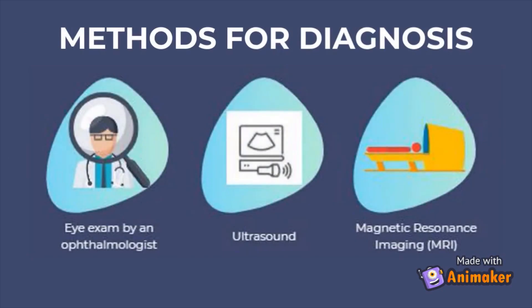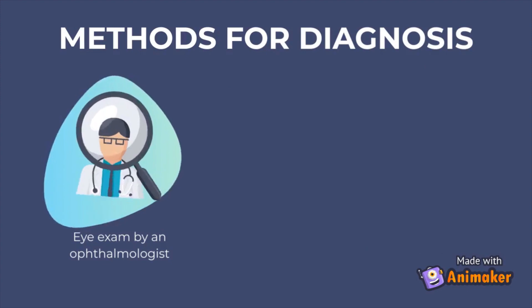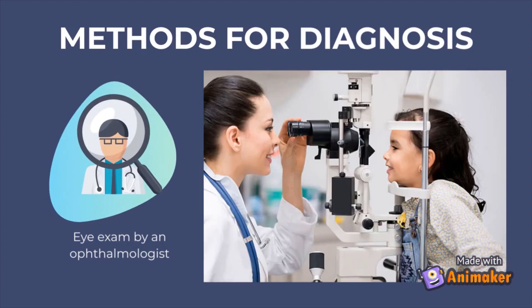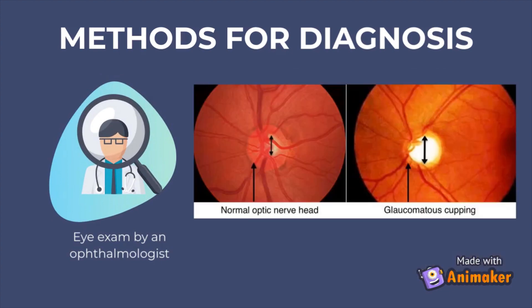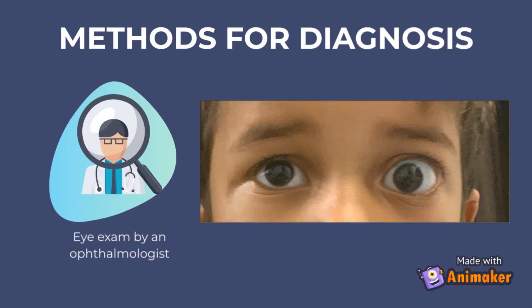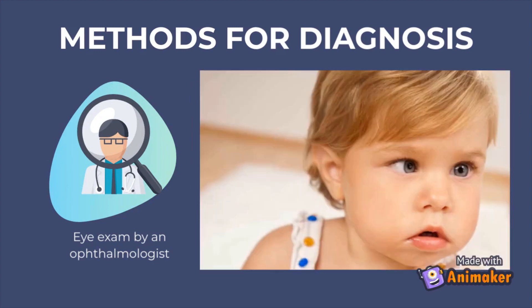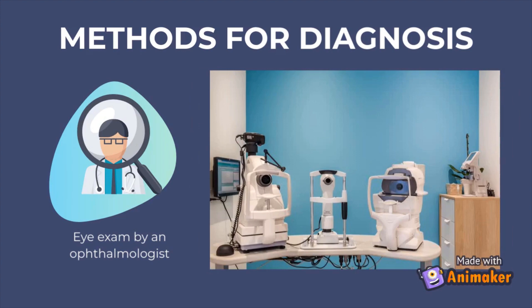Some tests and procedures commonly used to diagnose retinoblastoma include eye exams, ultrasounds, and magnetic resonance imaging. These procedures are conducted by ophthalmologists, also known as eye specialists. An eye exam is where the specialist checks eye health and looks for signs of retinoblastoma, some of which include glaucoma (increased eye pressure), proptosis (enlarged eyeball), and may also explore other eye conditions such as lazy eye. The specialist may also take images of the inside of the eye to determine the shape, size, and location of the tumors.